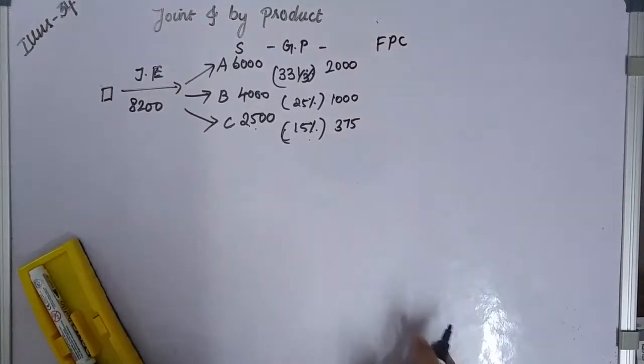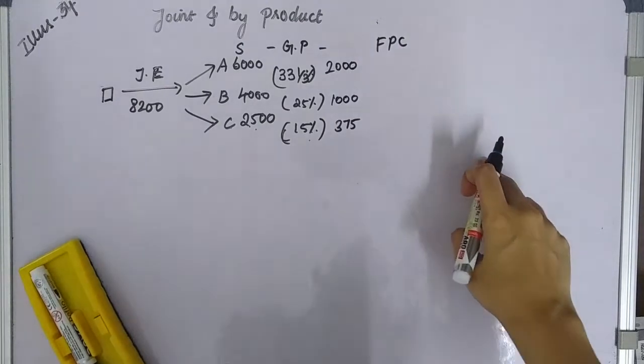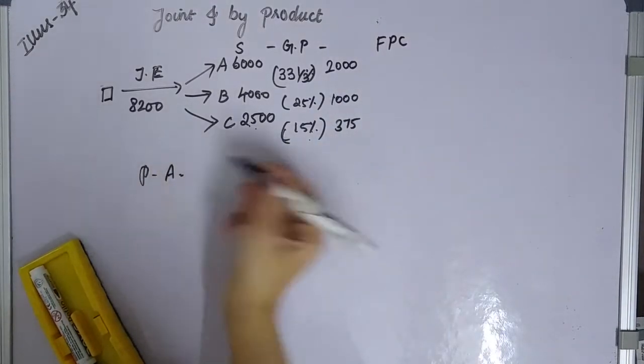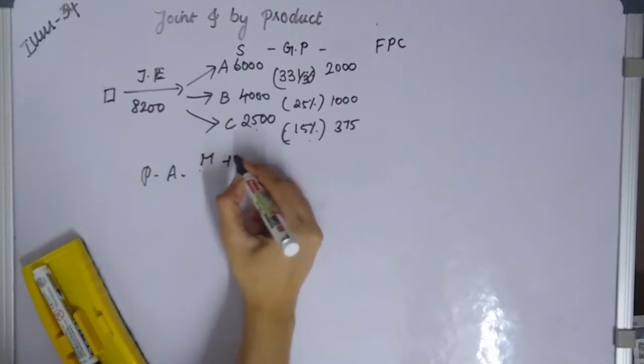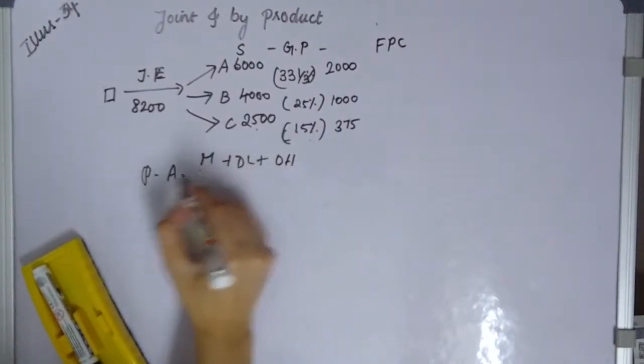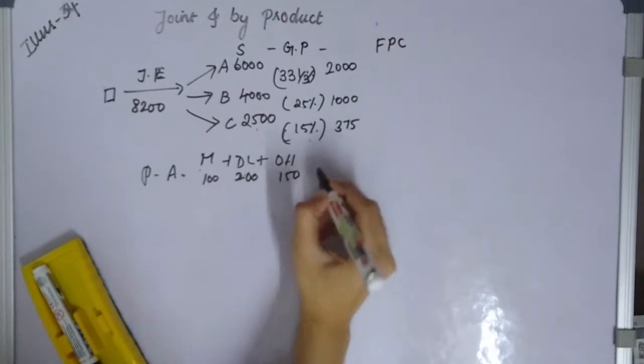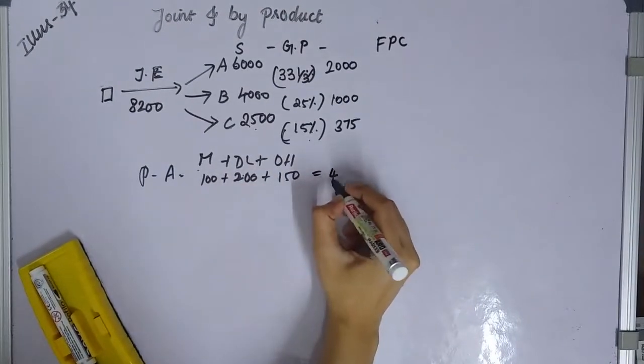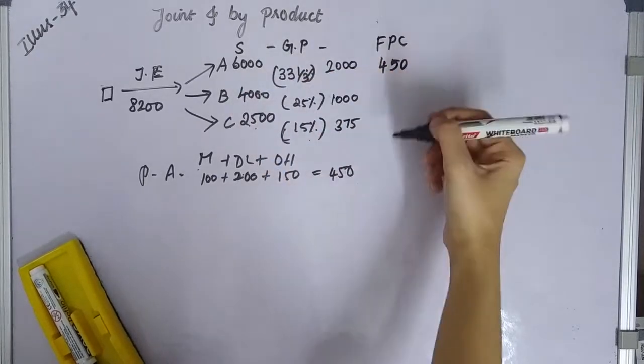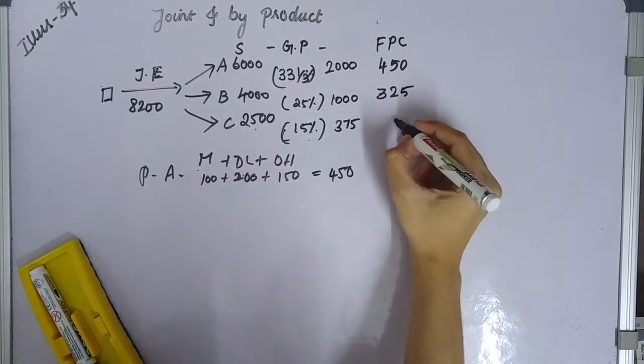Further process cost: For product A - material plus direct labor plus overhead equals 100 plus 200 plus 150, which totals 450. For product B, it's 325. For product C, it's 150.